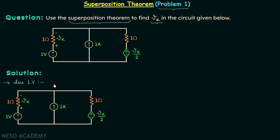We will make some modifications to the network. Modification one: we open-circuit this branch. Modification two: we rename this voltage — we will call it Vx1, and because of this the dependent source voltage becomes Vx1 divided by 2. Now we want to find Vx1. We will apply KVL in this loop, and let the current be I1.